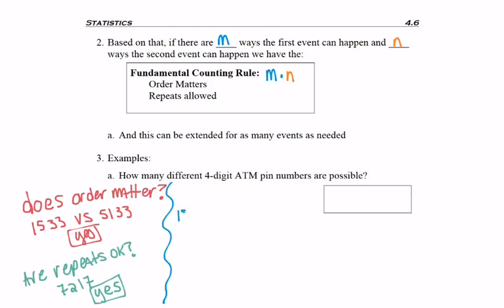So now we're ready to use the fundamental counting rule. The first number of my ATM PIN—the rule said how many ways for the first event to happen. So instead of putting an m here, I need to know that there are 10 ways I can pick the first digit to my ATM PIN, right? Because 0 through 9—no one said my PIN cannot start with 0.